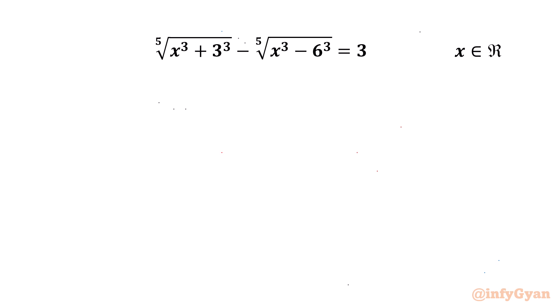Welcome back to Infigyan, my dear friends. In this video we have another very interesting question from radical equations. Our equation is: fifth root of (x³ + 3³) minus fifth root of (x³ minus x³) equal to 3, and we are going to calculate all real solutions.